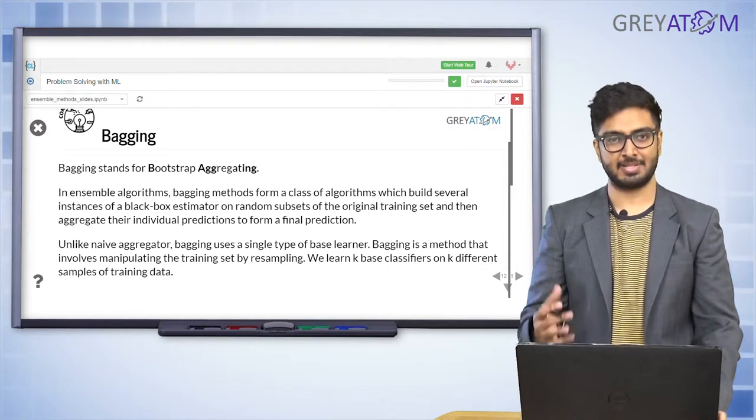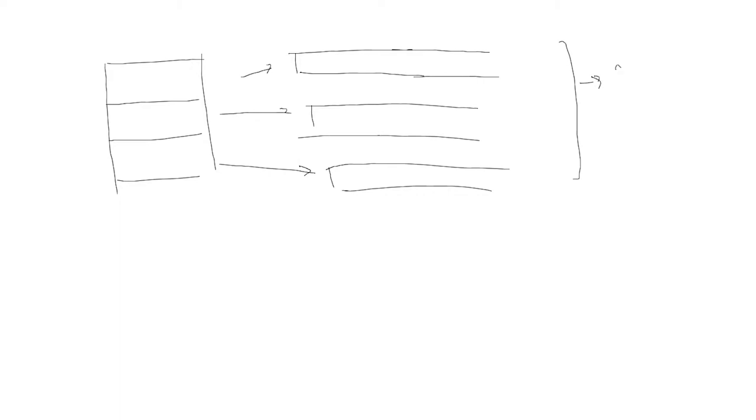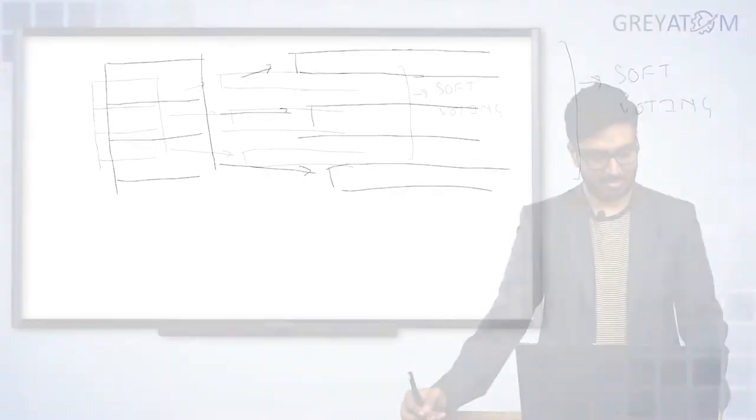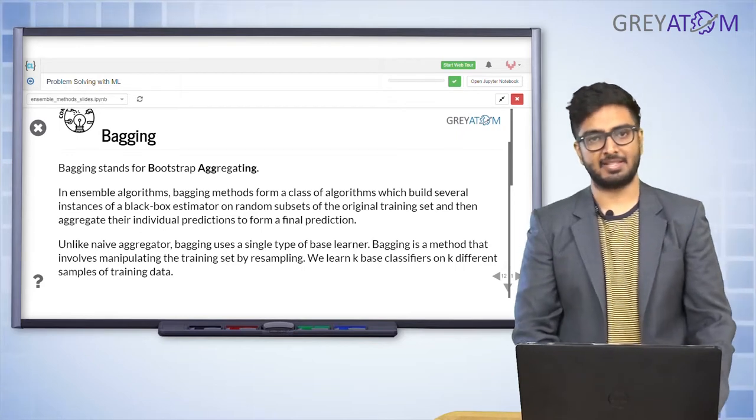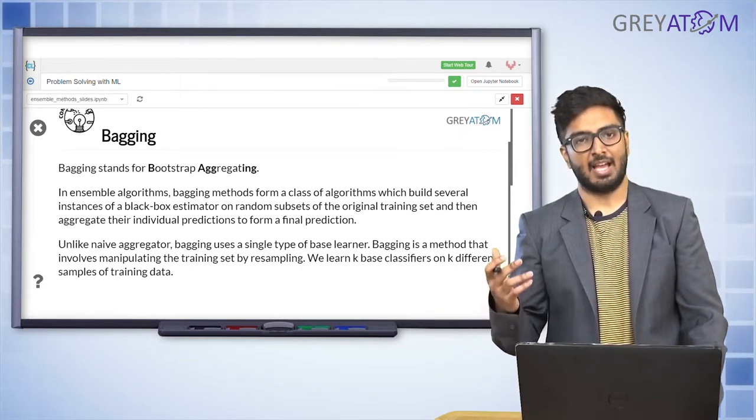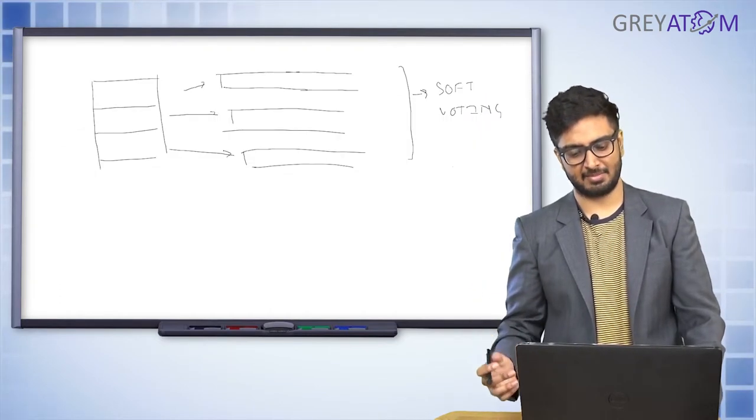Going back to the slides: we take a training dataset and split it by rows — not by columns — into multiple parts. We then train a model on each part. The same soft voting approach is applied: for any new data point, we take the probabilities from each model and average them. There are two methods we are going to talk about: bagging and pasting.